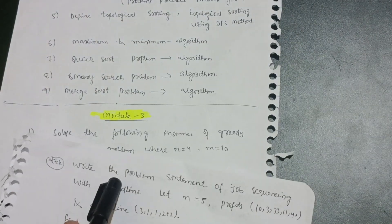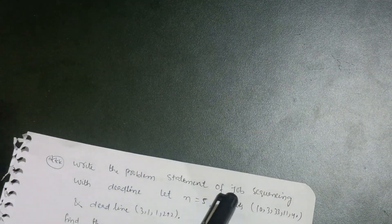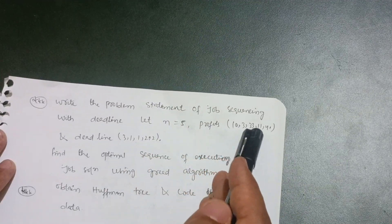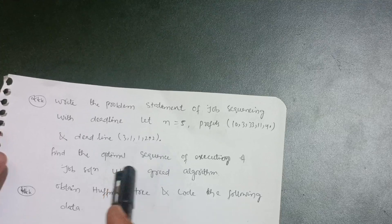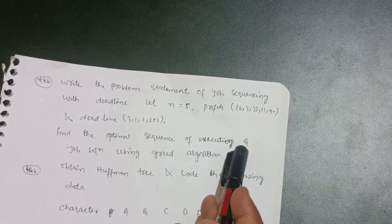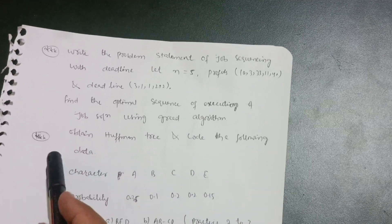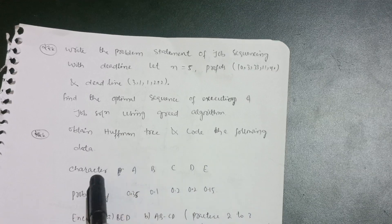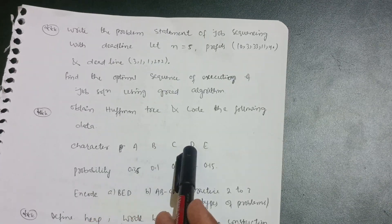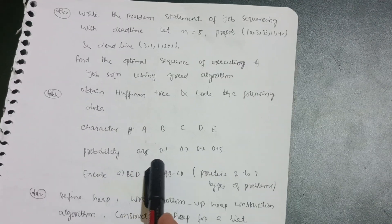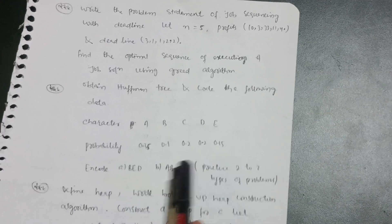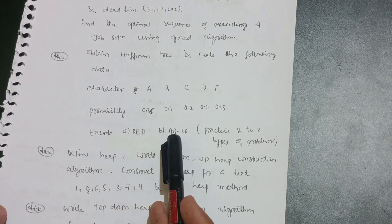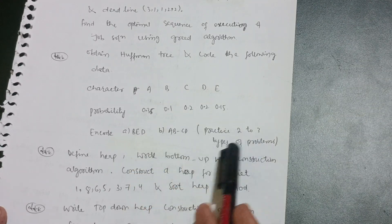Write the problem statement of job sequencing with deadline: n=5, profits = {10, 3, 33, 11, 40}, deadlines = {3, 1, 1, 2, 2} — find the optimal sequence using a greedy algorithm. Next important question: build a Huffman tree and encode the following data — characters A B C D E with probabilities 0.35, 0.10, 0.20, 0.20, 0.15. Practice two to three types of such problems.